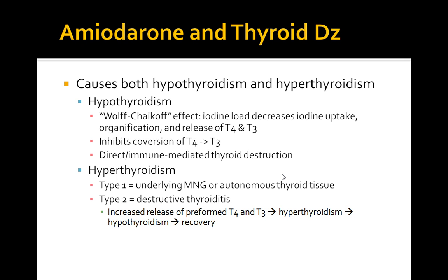To treat amiodarone-induced hypothyroidism, thyroxine is usually given to normalize the TSH, and you may need a larger than usual dose.